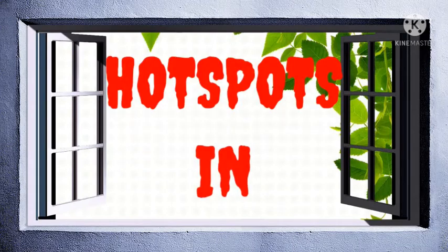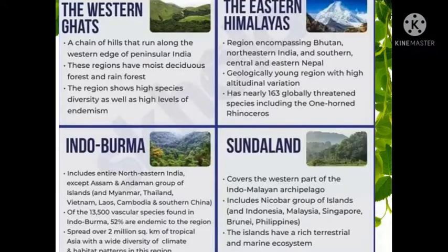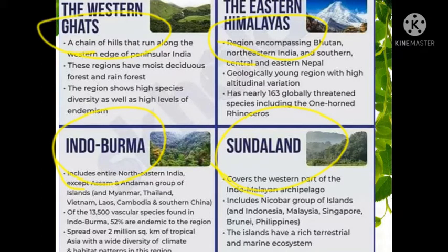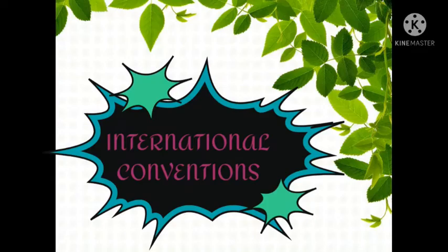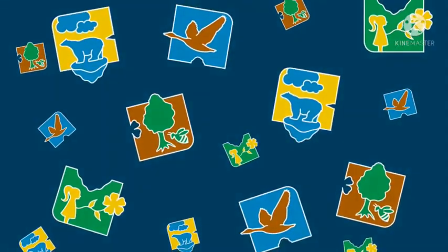Four out of the 36 biodiversity hotspots in the world are present in India: the Himalayas, the Western Ghats, the Indo-Burma region, and the Sundarland.